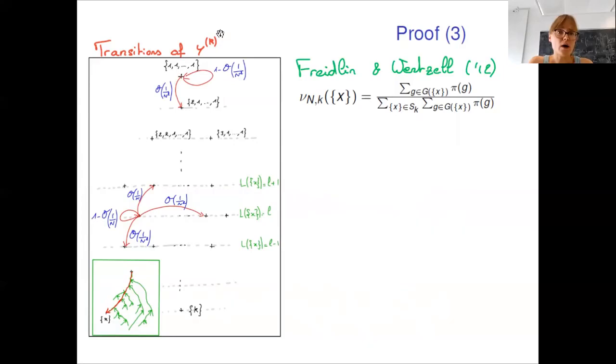Now let's take a look at the transition of the chain YK. On every horizontal line, I put the states that all have the same length, which means the state for which the number of occupied sites by the K particle Markov chain is the same. What we obtain is that the transition probabilities of Y are of this form. The transition probabilities are of order 1 over N if the number of occupied sites is increased by 1. It's of order 1 over N squared if the number of occupied sites is decreased by 1. It's of order 1 over N squared if the number of occupied sites remains the same, but the chain changes state. And finally, the probability of staying in the same state for Y is equal to 1 minus something that is equivalent to 1 over N.